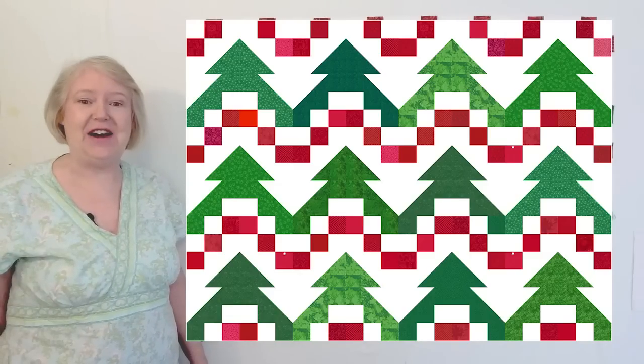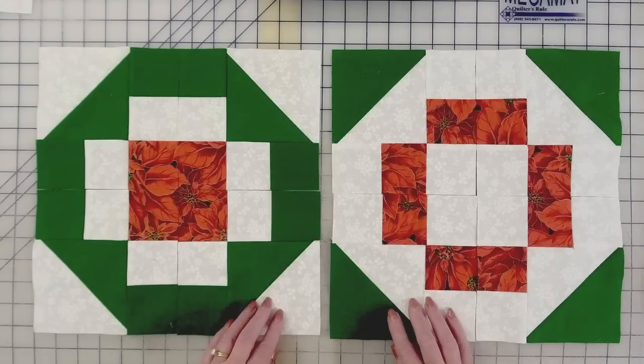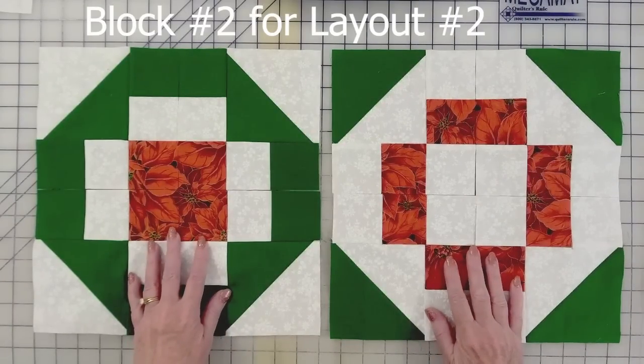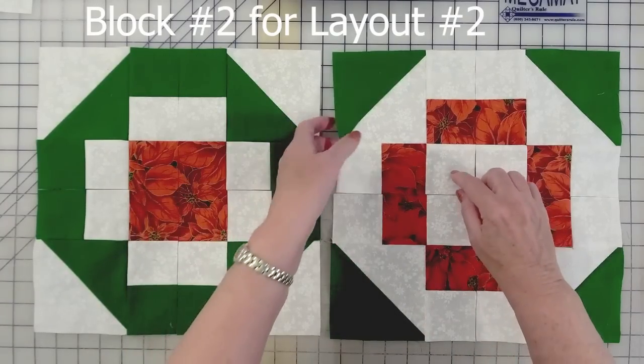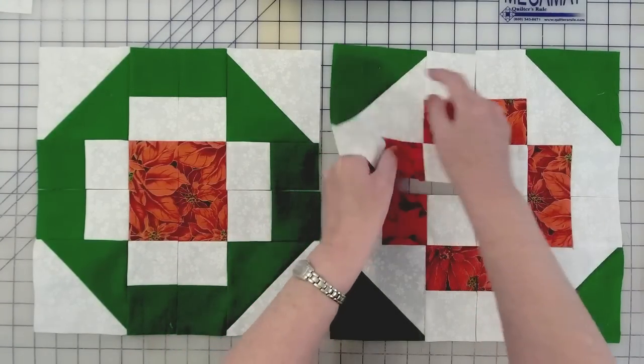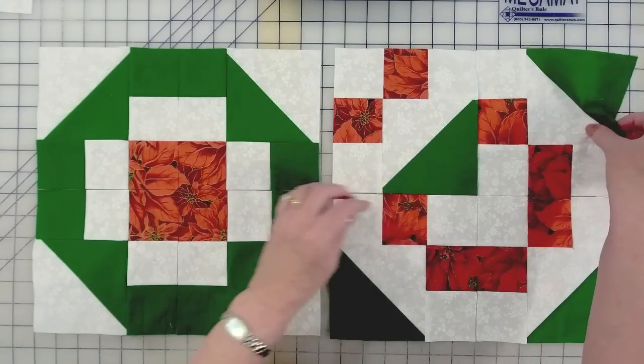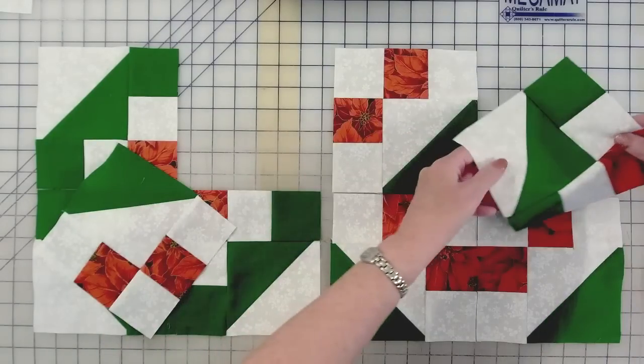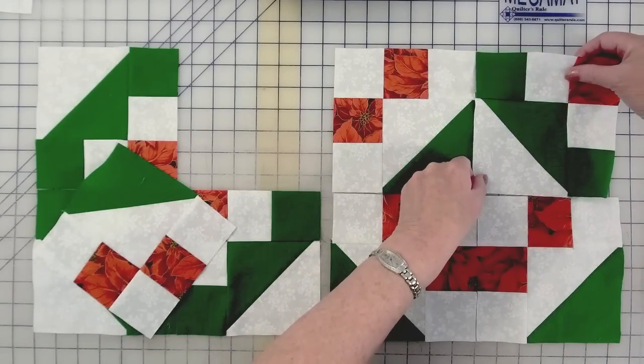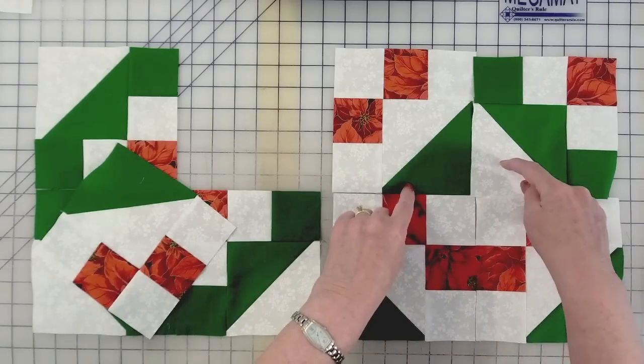Now, to the other layout. Block number two starts off just like block number one. You've got a positive and a negative Grecian square. And we're going to use two pieces from each. We're going to take this. See this green is going to go to the center. And here's where we start to go different. See this white corner? It's going to go here. So we've got green and white trees in this one. So the top of the tree is green and white.